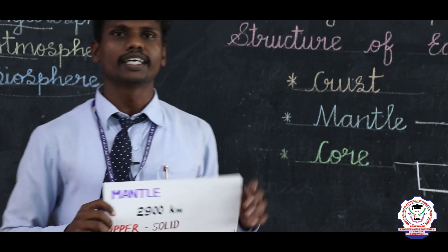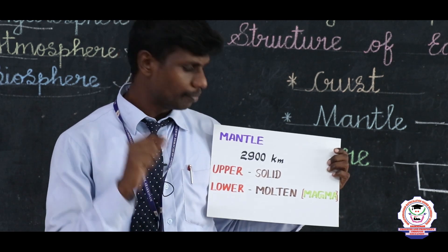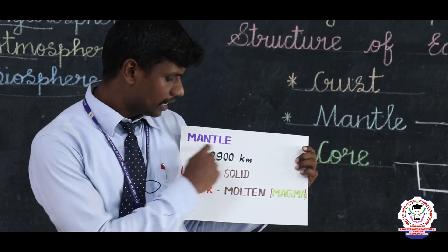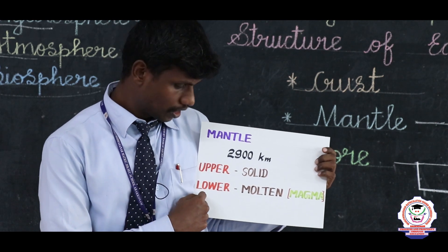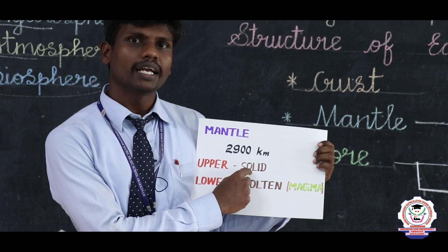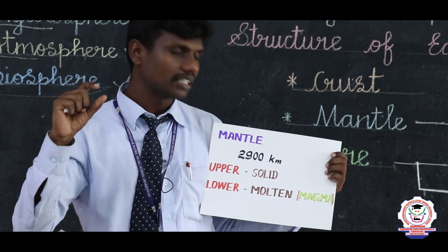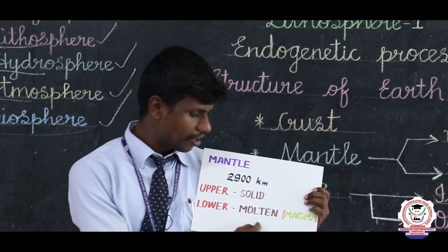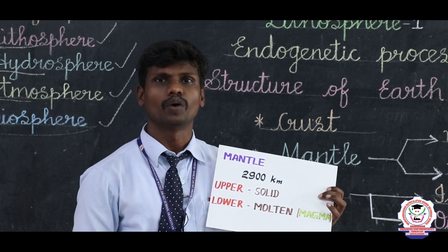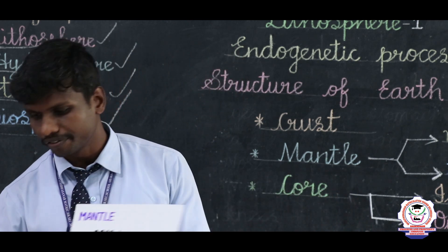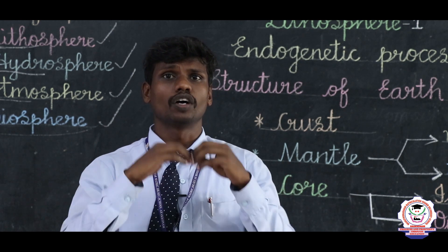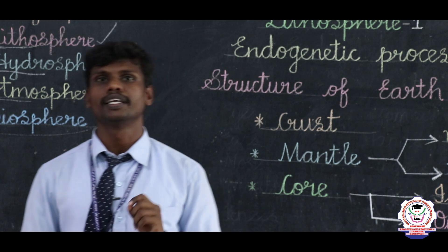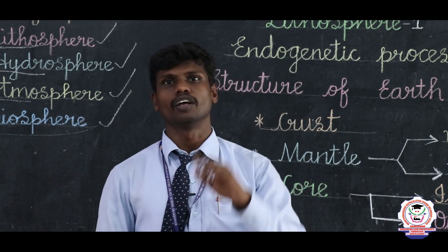The next layer is the mantle, the second layer of the earth. The crust extends from 5 to 30 kilometers, while the mantle extends almost 2,900 kilometers. The mantle can be divided into two parts: upper and lower. The upper mantle is solid because there are very rigid rocks there. The lower mantle has rocks in a molten form, also called magma. Magma is the liquid form of rocks. When magma comes out, it is called lava — this happens during a volcanic eruption.